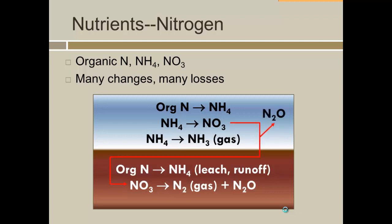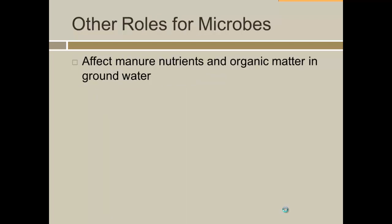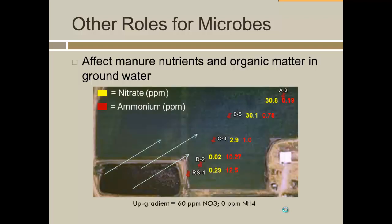Anaerobically, you tend to get more ammonia hanging around that can leach or run out of the system. Nitrate, if it finds its way there, will end up getting converted to nitrogen gas and nitrous oxide — one of those potent greenhouse gases people worry about. To illustrate this, we had a leaky holding pond system where you could see a lot of ammonia coming off in the groundwater at first, but eventually the ammonia goes away and nitrate builds up, illustrating that conversion of ammonia to nitrate by bacteria working in the groundwater.